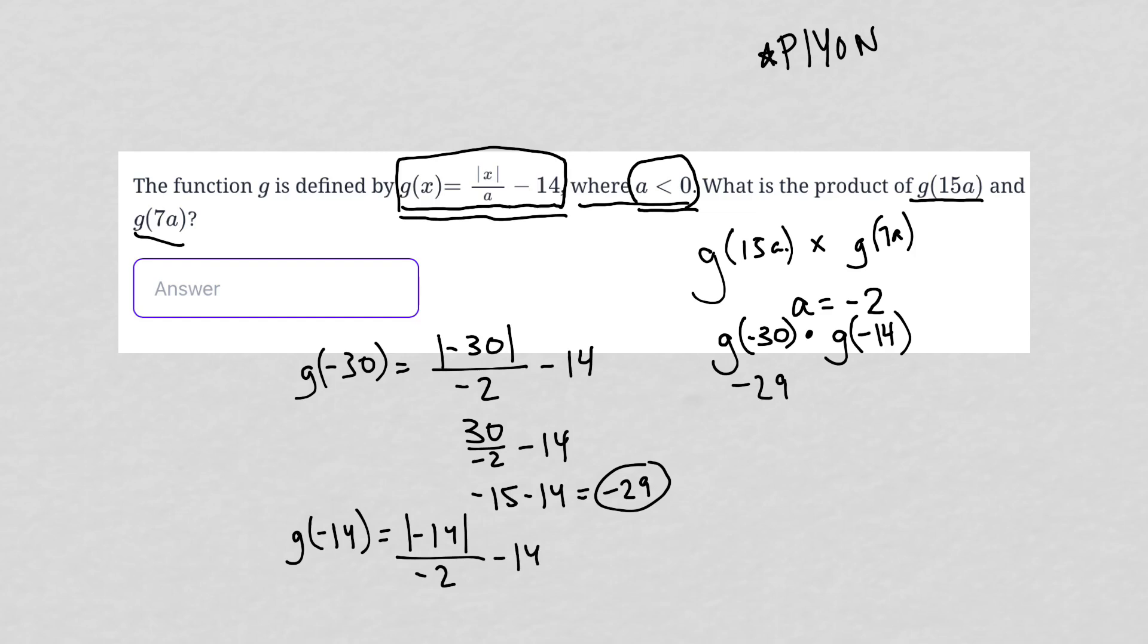The absolute value of negative 14 is positive 14 divided by negative 2 minus 14. 14 divided by negative 2 is equal to negative 7 minus 14, and negative 7 minus 14 is equal to negative 21. Therefore, g(-14) is negative 21.